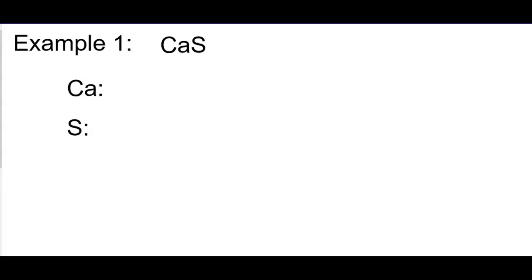First, you will discover the types of atoms in the chemical formula. For instance, we have calcium and sulfur atoms. So first, list the atoms present — calcium and sulfur. Then you're going to list the quantity of each atom present in the chemical formula. It's very important that you have written a correct chemical formula to be successful.